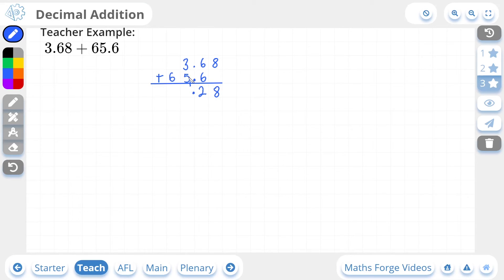3 plus 5 is 8. Plus the 1 that was carried over makes it 9. And then we have 6, which nothing is being added onto. It just gives us 6. So 69.28 should be our final answer. Let's check our answer. There it is.